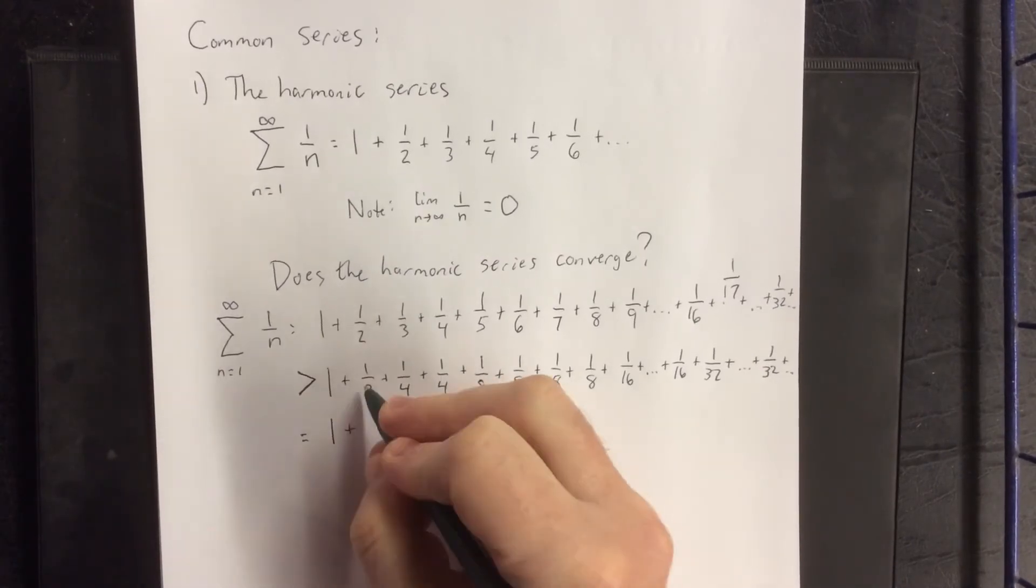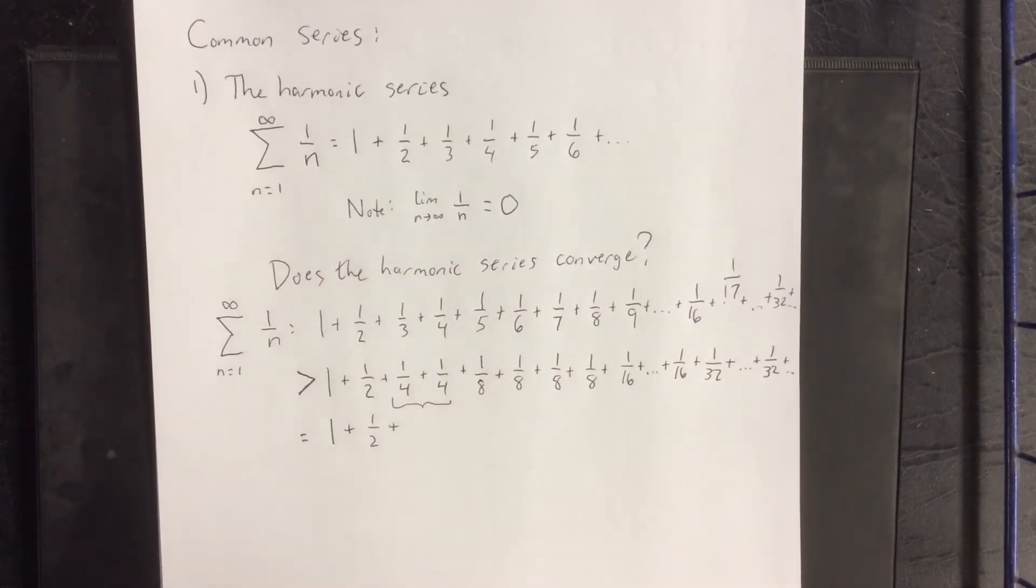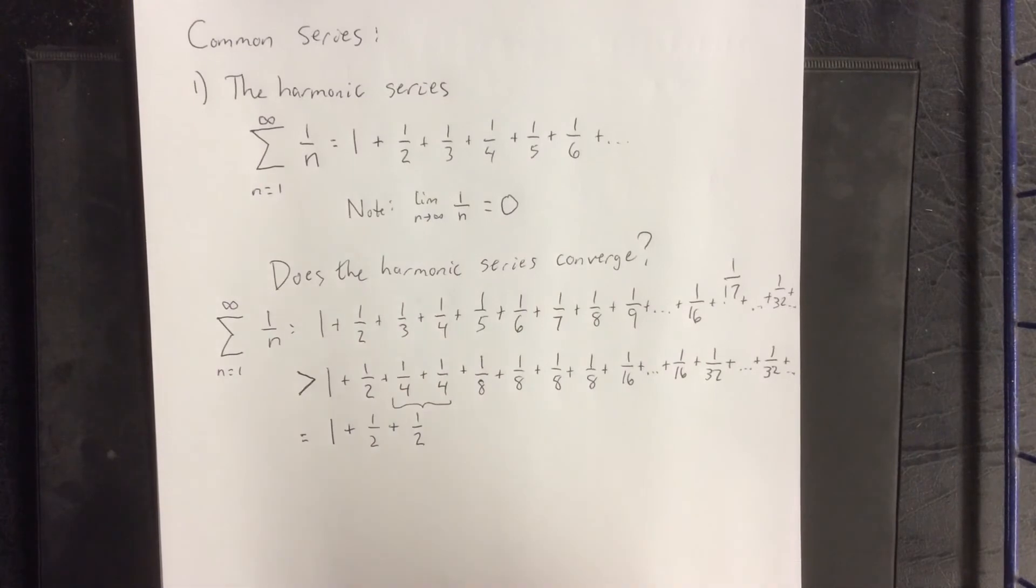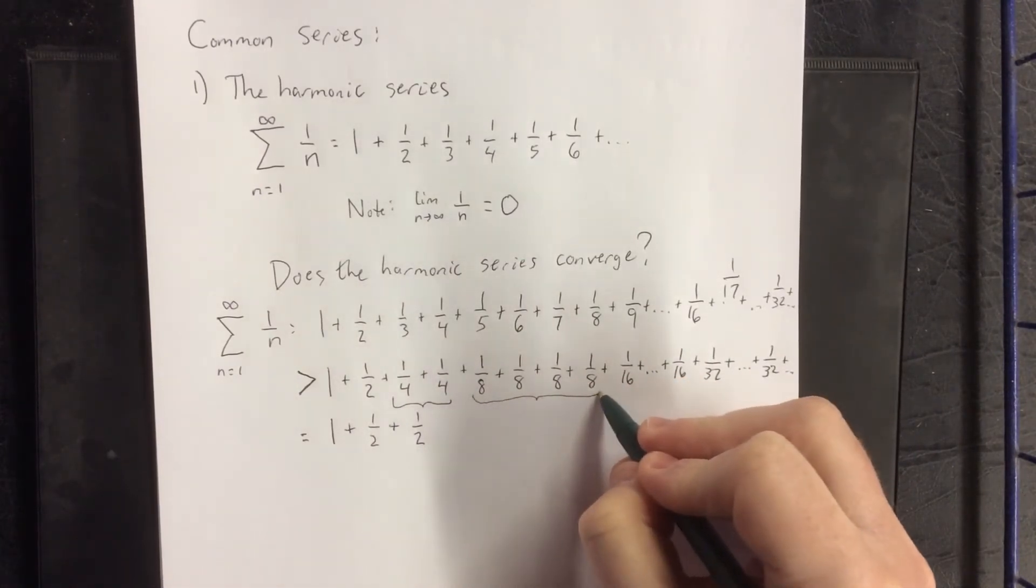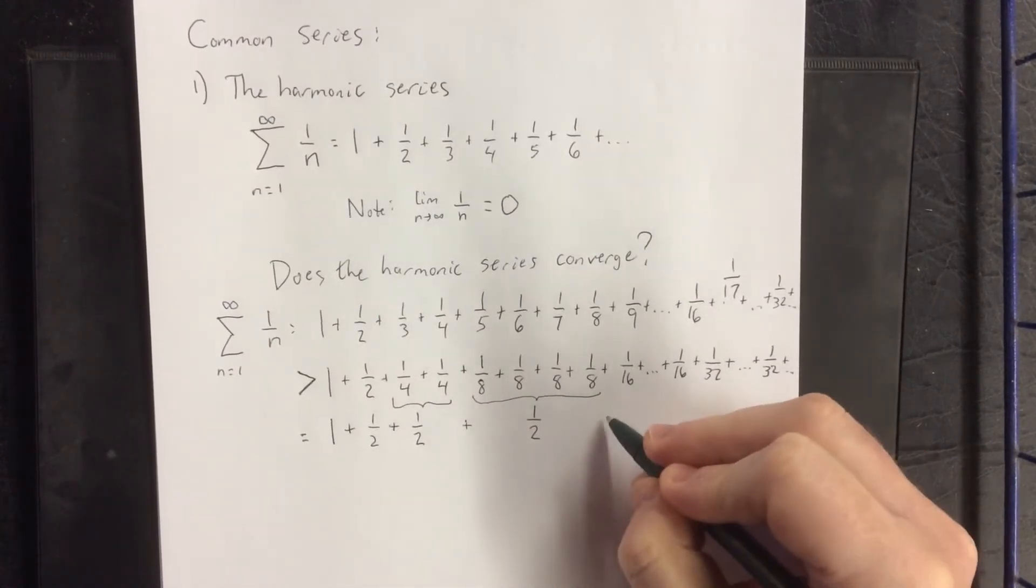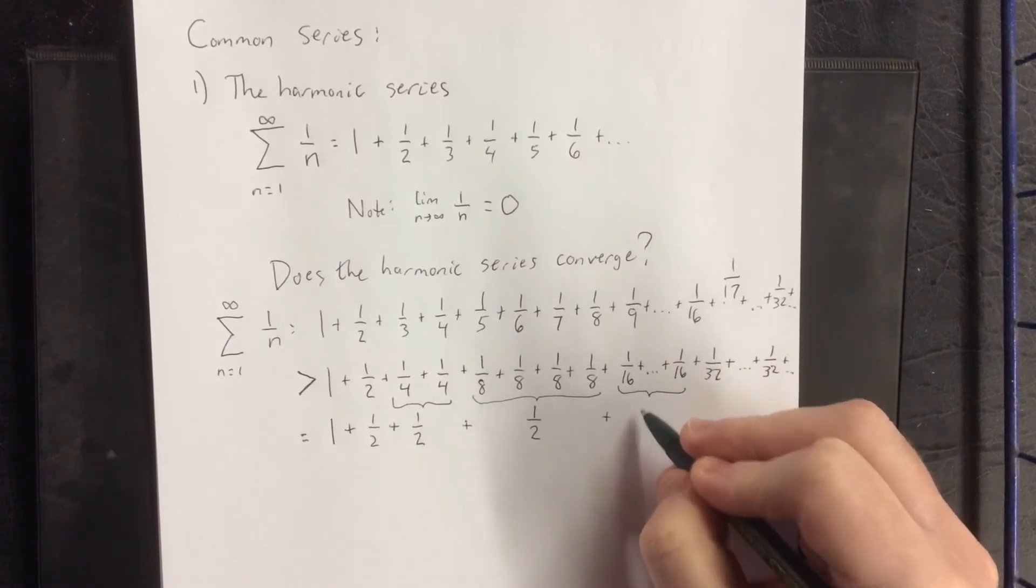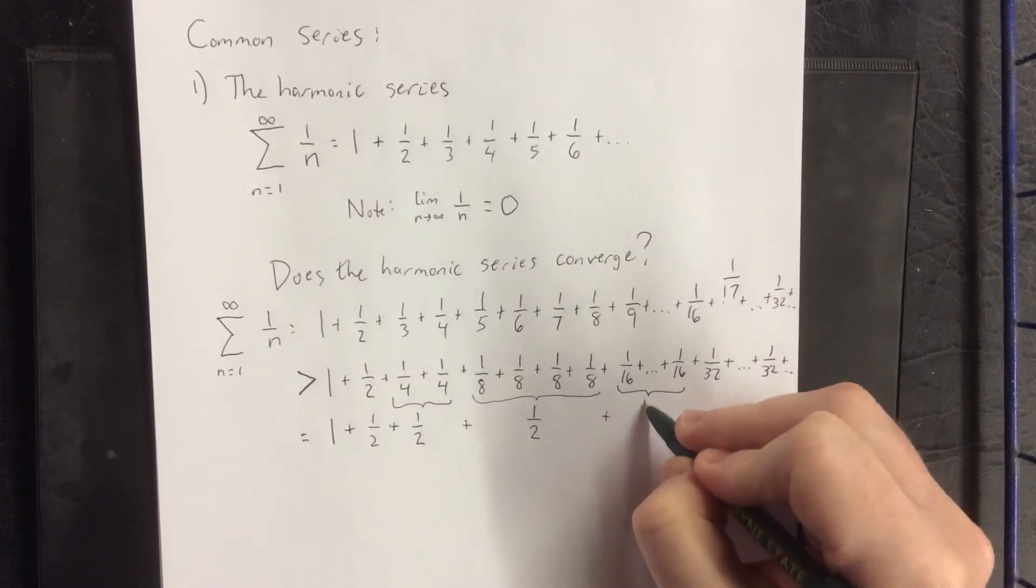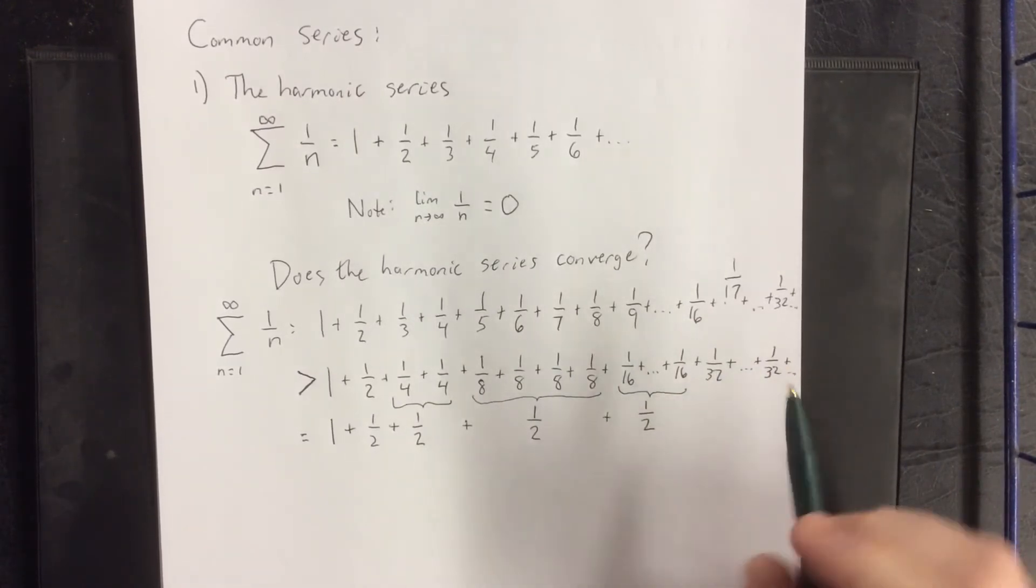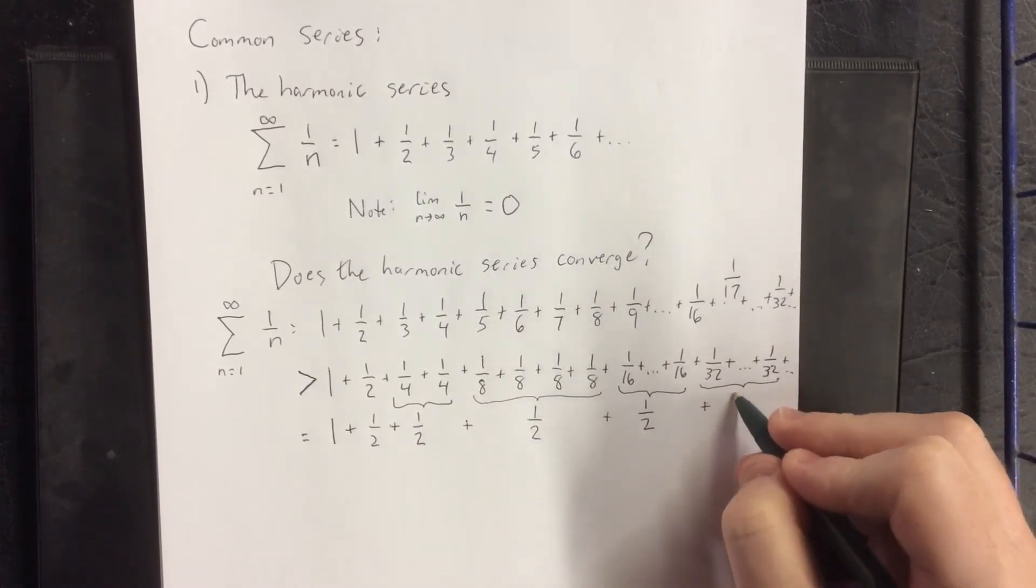1 is 1. 1 half is 1 half. I'm going to simplify 1 quarter plus 1 quarter. I'm going to get 2 quarters. 2 quarters reduces down to 1 half. I'm going to take all of these 1 eighths, 4 in total, and add them together. I'm going to get 1 half. I'm going to take these 8 sixteenths that I would have created from n equals 9 to n equals 16. That'll be 1 half as well. From n equals 17 to n equals 32, there are 16 numbers with a denominator of 32. That is 1 half.